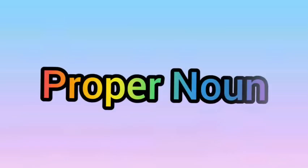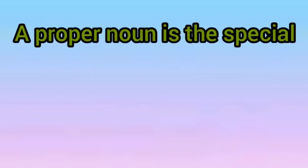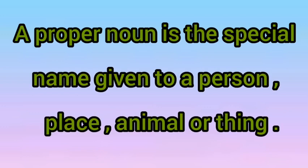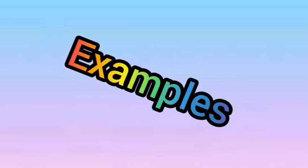Now let's talk about the next type. The next type is a proper noun. What is a proper noun? A proper noun is the special name given to a particular person, place, animal or thing. If we are talking about any particular name or particular object, that is a proper noun. For example, if I am talking about a person and specifically about Sachin Tendulkar, then Sachin Tendulkar is a proper noun. Here some examples are given below.